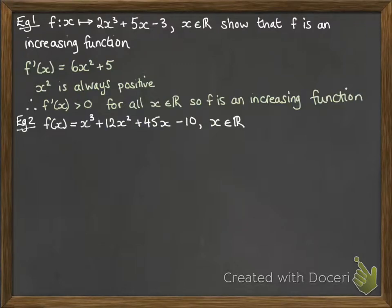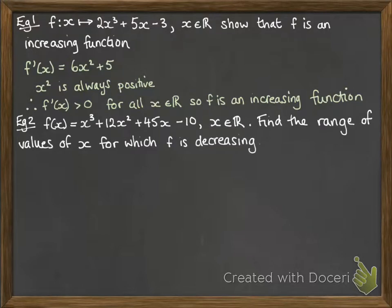We'll do another example. This time we want to find the range of values of x for which f is decreasing. So it's not decreasing over the whole function; we want to find out where it is. Differentiating, we get 3x² + 24x + 45.